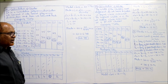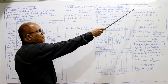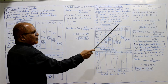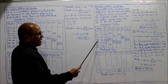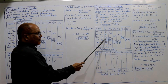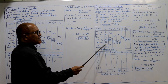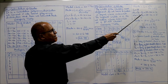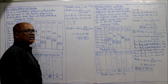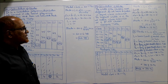Modal class is 18 to 24. Mode = l + (delta1 ÷ (delta1 + delta2)) × i. l=18, f₀=38, f₁=36, f₂=33. Delta1 = 38−36=2, delta2 = 38−33=5, i=6. Mode = 18 + (2 ÷ (2+5)) × 6 = 19.71. That is the end of problem 13.